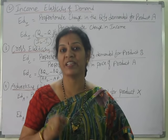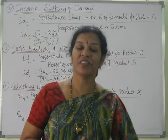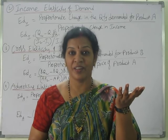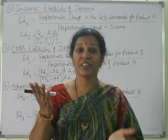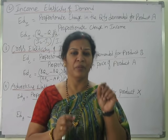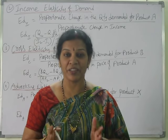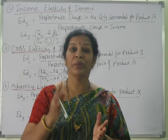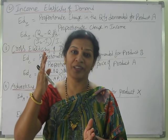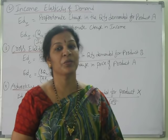The second type of elasticity of demand is income elasticity of demand. The name says it clearly — because of income. If income is changing, definitely demand will be more; if income is decreasing, demand will be less. The best example is the IT sector: they were giving a lot of salaries and packages, which caused a boom in real estate. After the IT sector came down, real estate also came down automatically. This is the impact of income on demand.